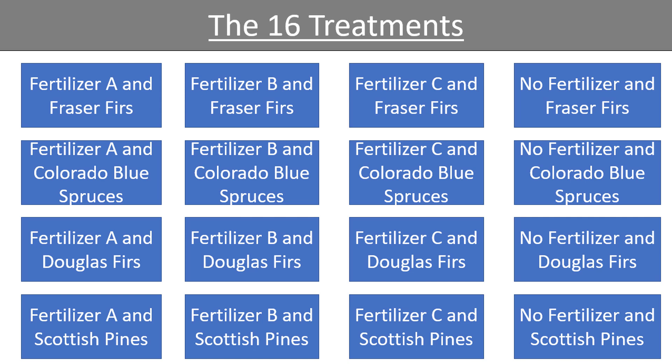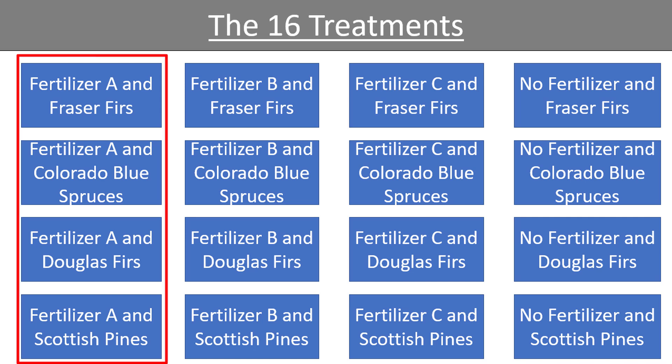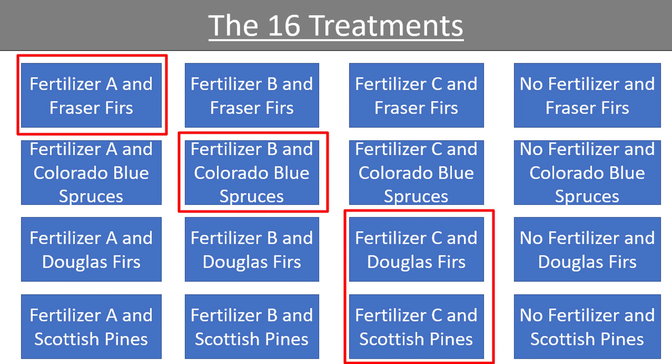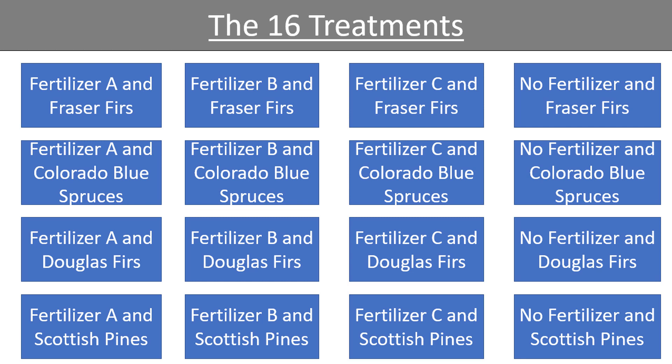There are many different possible results from this experiment. It could be the case that a single fertilizer outperforms the others for all four trees, such as fertilizer A. Or it could be the case that a certain fertilizer — perhaps fertilizer A — is better for one tree, and perhaps another fertilizer — maybe fertilizer B or C — is better for the other trees. It also could be the case that fertilizer does not have any effect at all. Alright my friends, we have finished our discussion of experimental designs. We will be exploring many more fun and exciting statistical topics, so make sure to subscribe and check out our other videos.